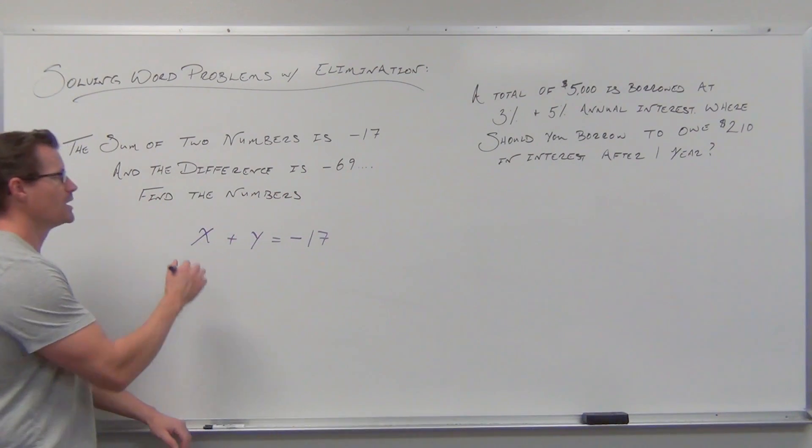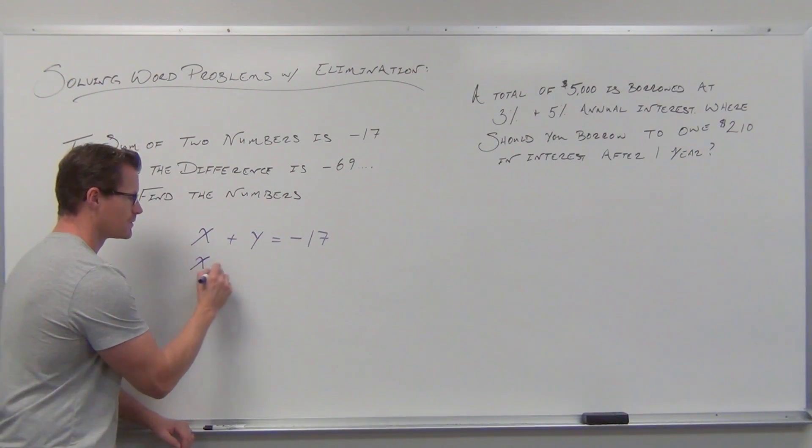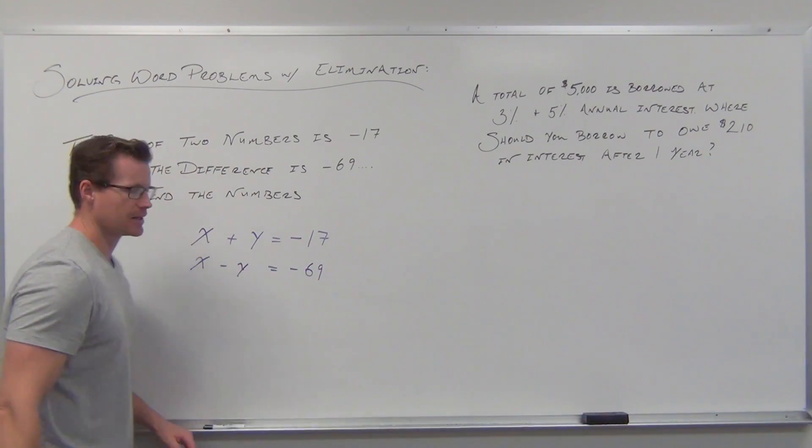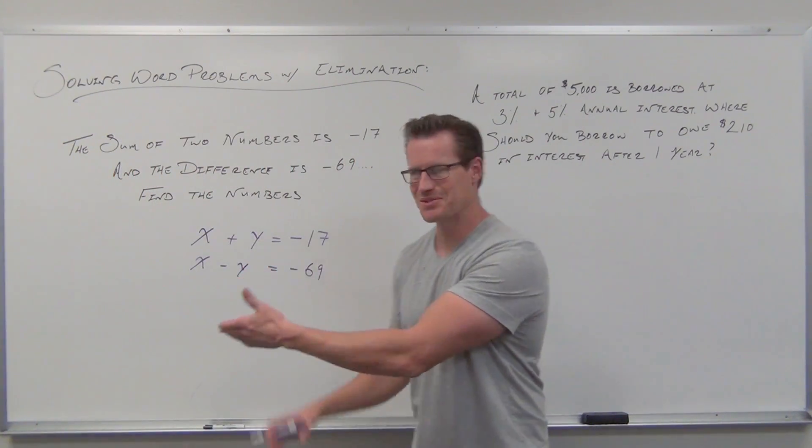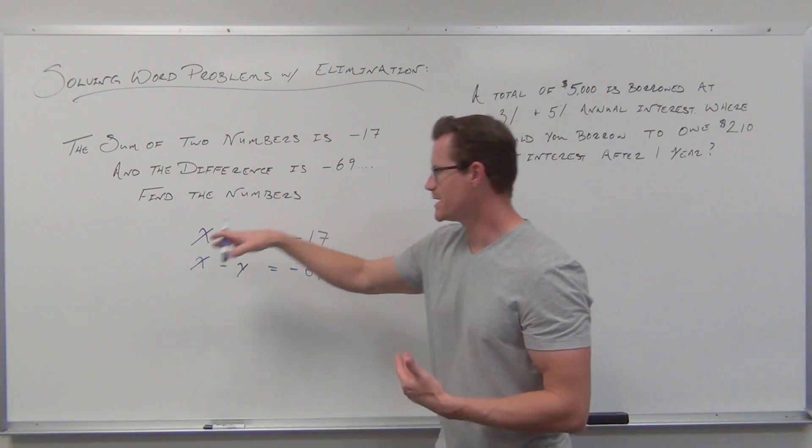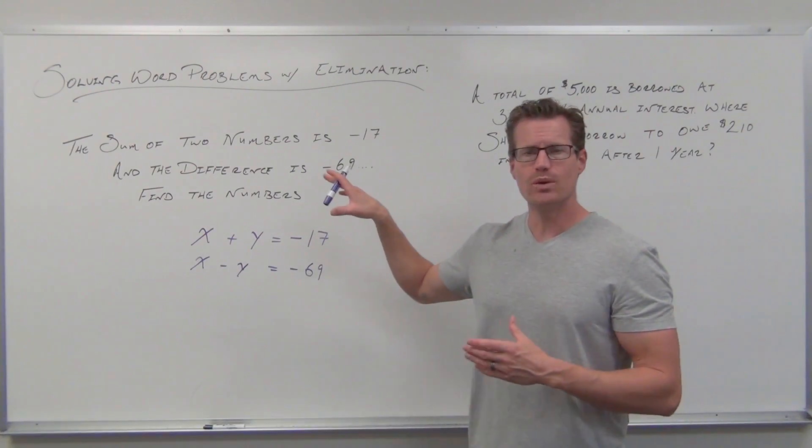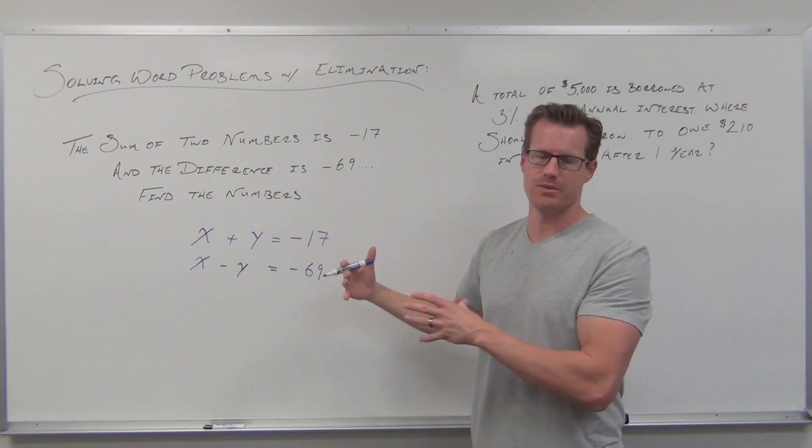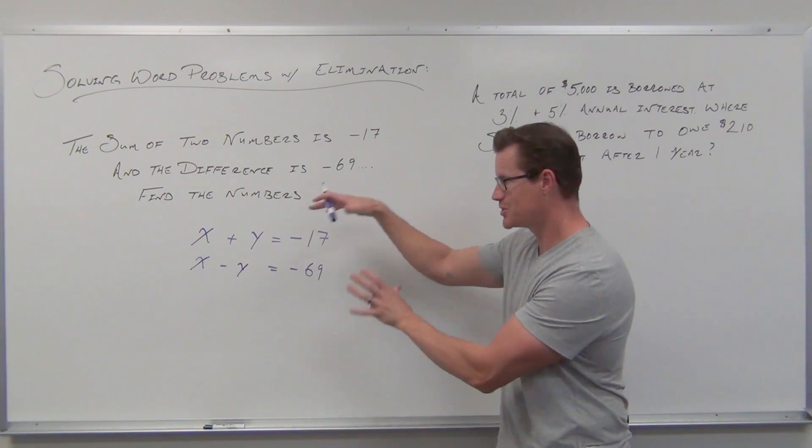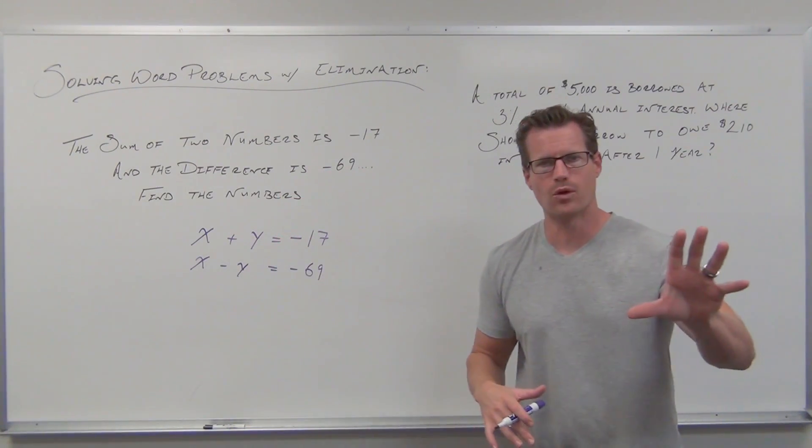As soon as we set that up, x + y = -17, x - y = -69, we get something we're clearly familiar with. That's a system of linear equations with two equations and two variables.